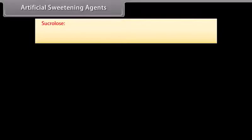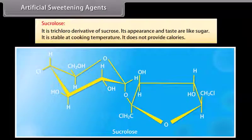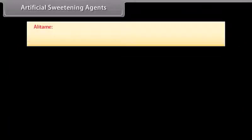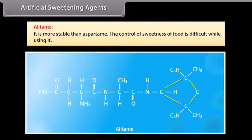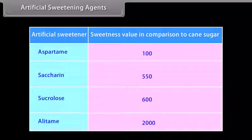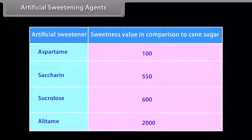Sucralose is a trichloro-derivative of sucrose; its appearance and taste are like sugar, it is stable at cooking temperature, and does not provide calories. Alitame is more stable than aspartame, but control of sweetness of food is difficult while using it. In terms of relative sweetness compared to cane sugar: aspartame is 100 times sweeter, saccharin is 550 times sweeter, sucralose is 600 times sweeter, and alitame is 2000 times sweeter.